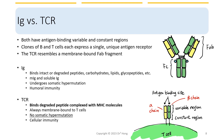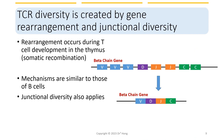The T cell receptor is always membrane-bound to T cells, and it does not gain diversity through somatic hypermutation. T cell receptor diversity is created by gene rearrangement that occurs during T cell development in the thymus — we also call this process somatic recombination. The mechanisms are similar to those of B cells, and therefore junctional diversity also applies, because recombinases cut the gene complexes in a staggered way, just like in B cells. However, T cell receptors lack somatic hypermutation.